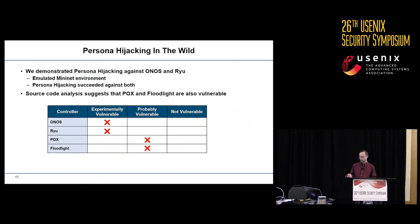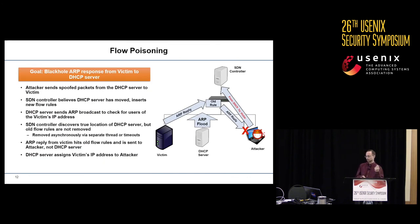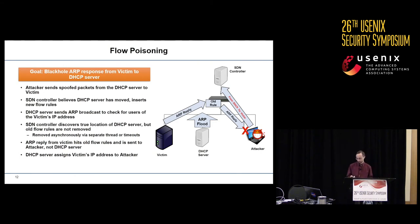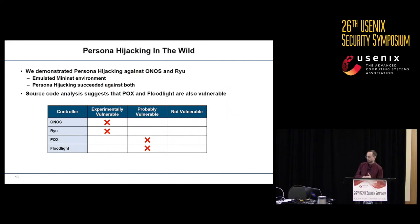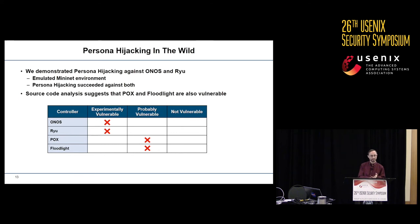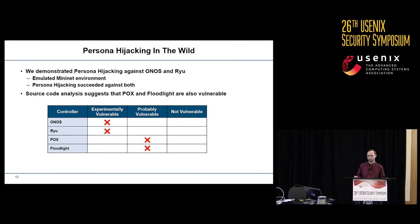This leaves the attacker free to complete the DHCP handshake with the victim's IP address and complete the attack. The attack will last until the victim attempts to renew its DHCP lease, which is typically on the order of hours or days. We've tested persona hijacking against both the ONOS and Ryu SDN controllers in a Mininet environment, and found the attack works extremely well against both controllers, enabling the attacker to hijack the IP address and DNS name. A source code analysis of the POX and Floodlight controllers also suggests they are vulnerable, with no defenses against these identifier binding attacks at all.